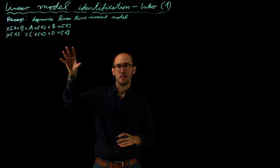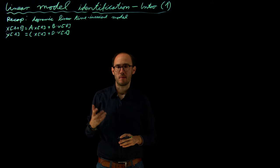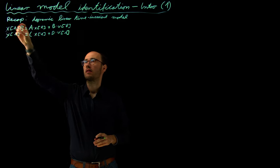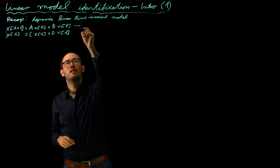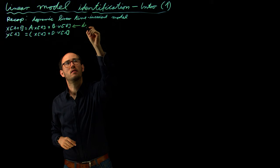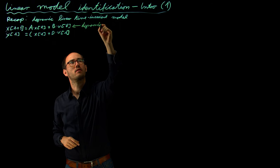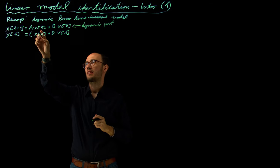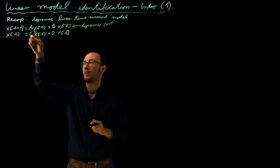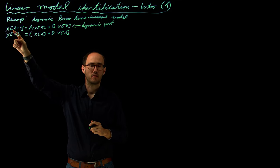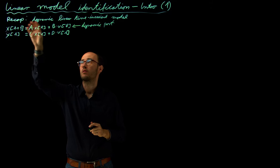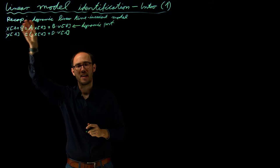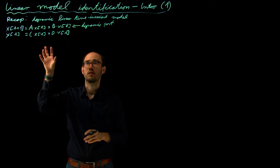In the difference equation which we can see here, we can basically identify two sub-models. The first sub-model is the dynamic part, which describes the temporal relation between X at time step K and X at the next time step K plus one, also considering the input. So the entire dynamics of the state-space model are encoded in this part.